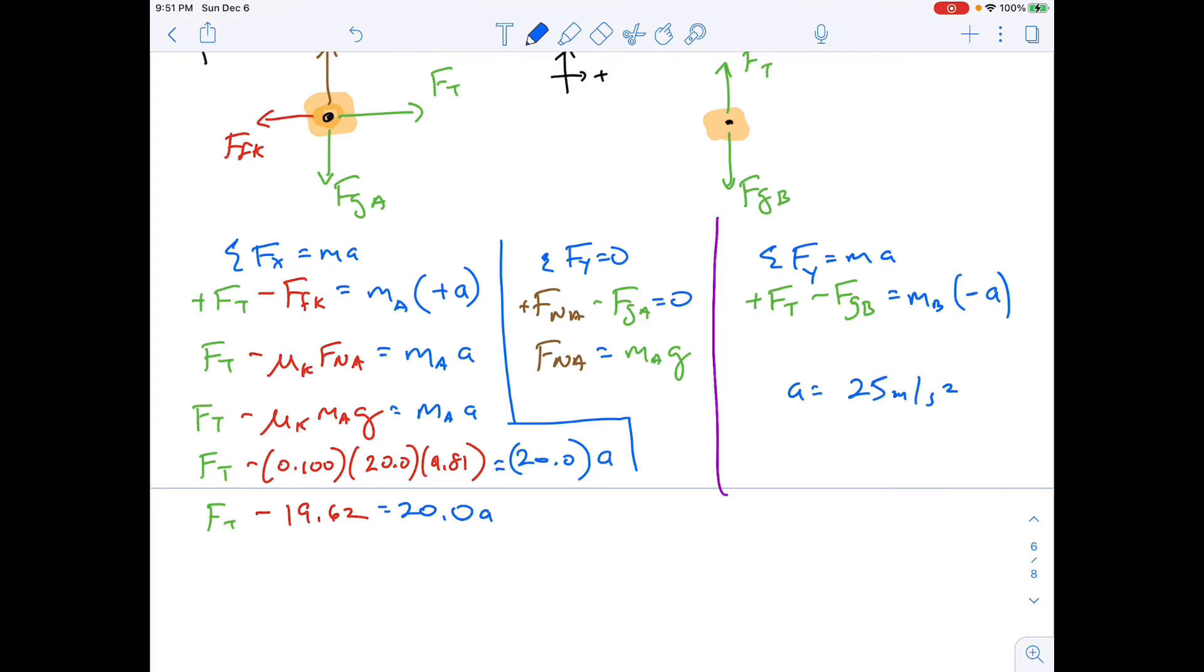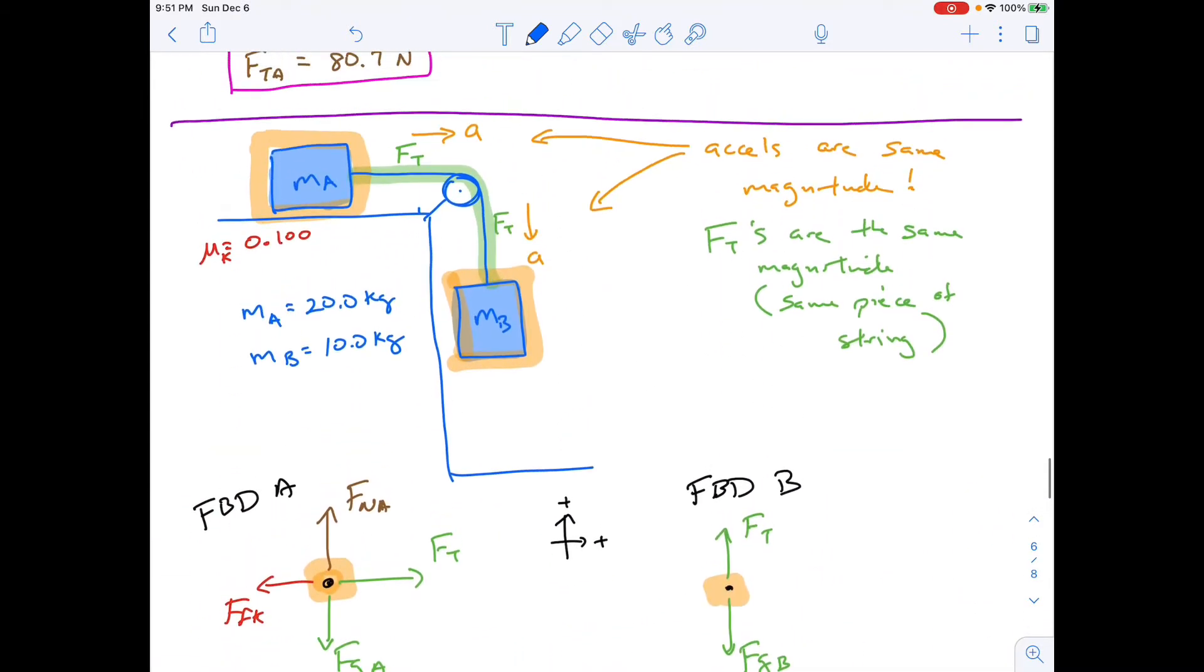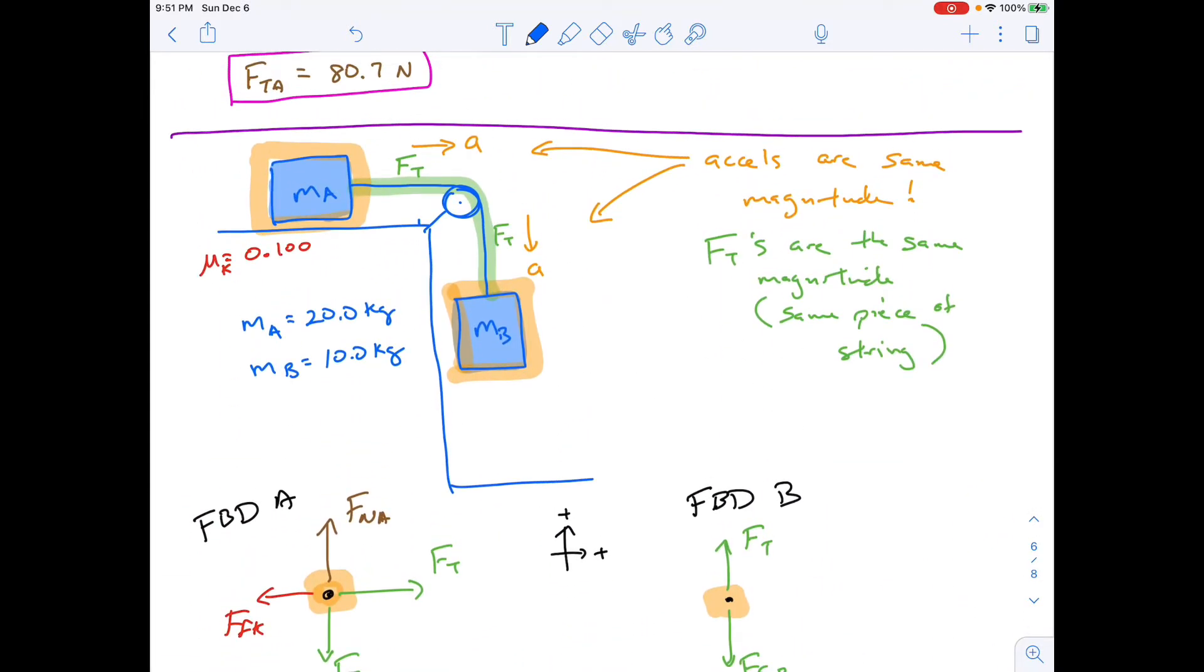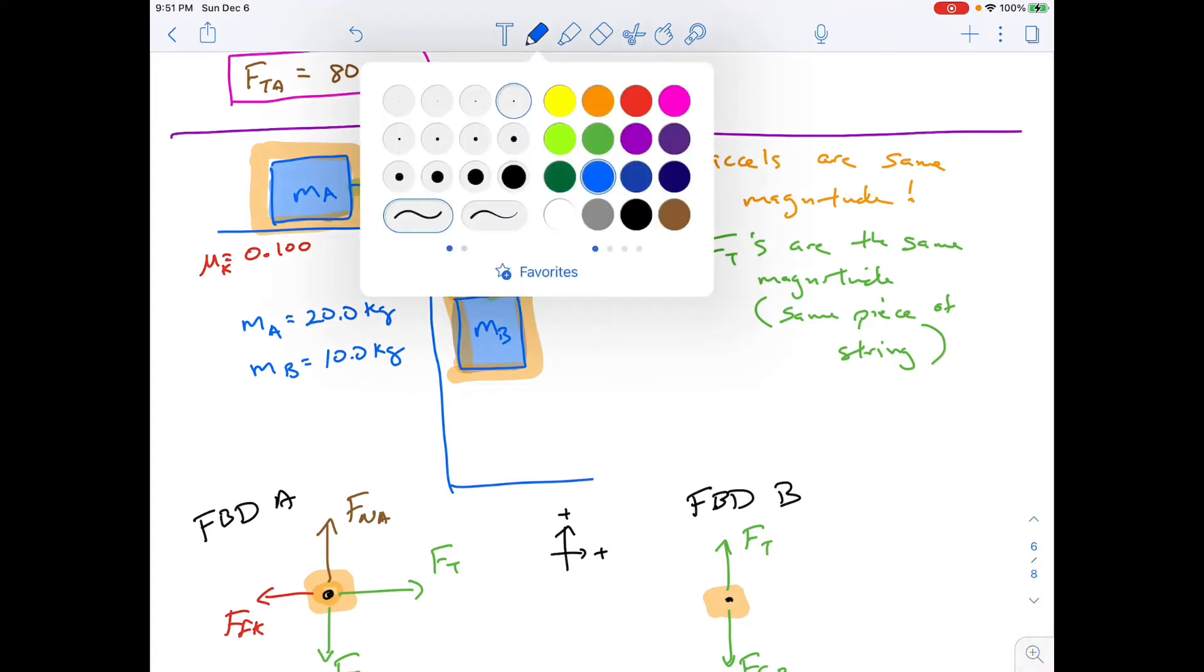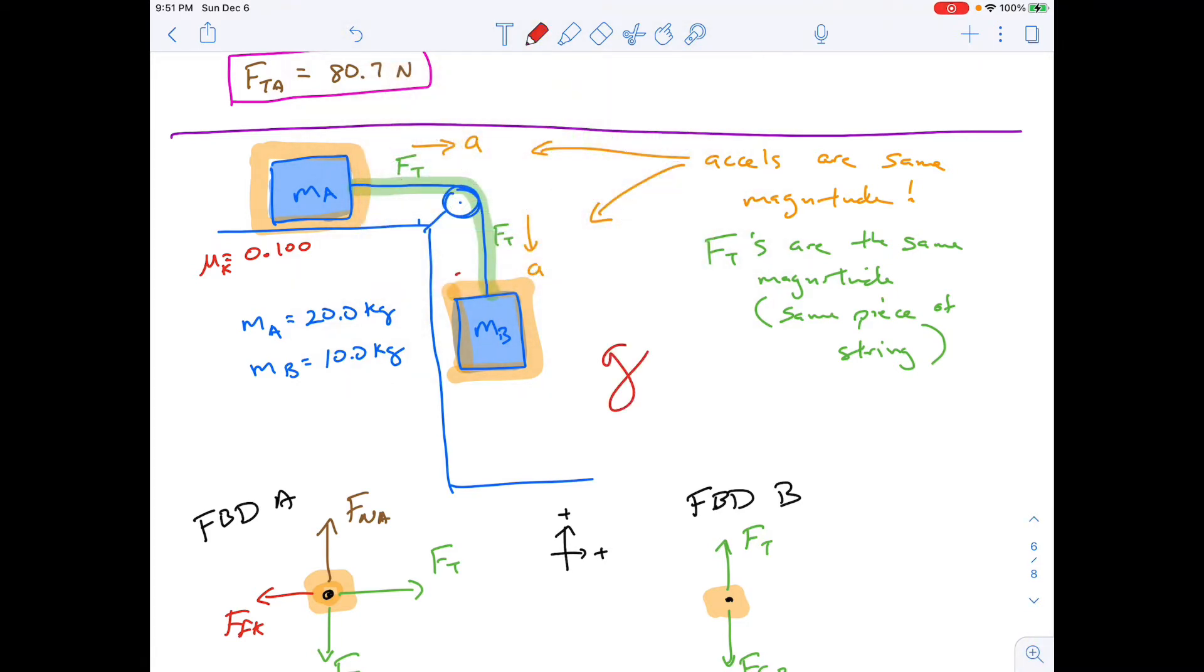you're going to find that your acceleration is not going to be correct. You're going to come down and you could get an acceleration of 25 meters per second squared. And you're like, yeah, my acceleration is 25 meters per second squared.